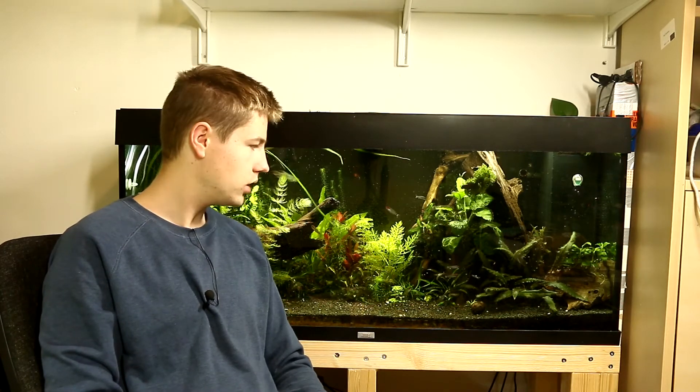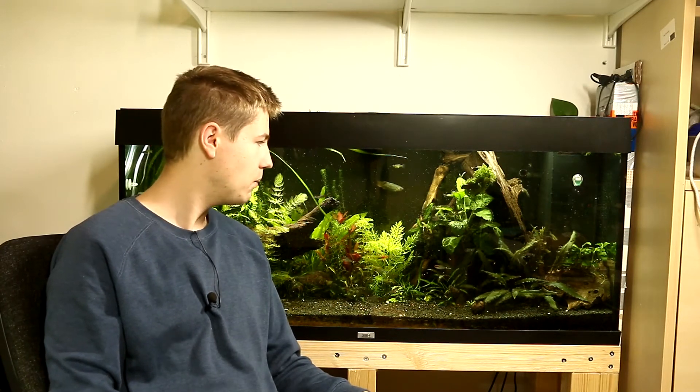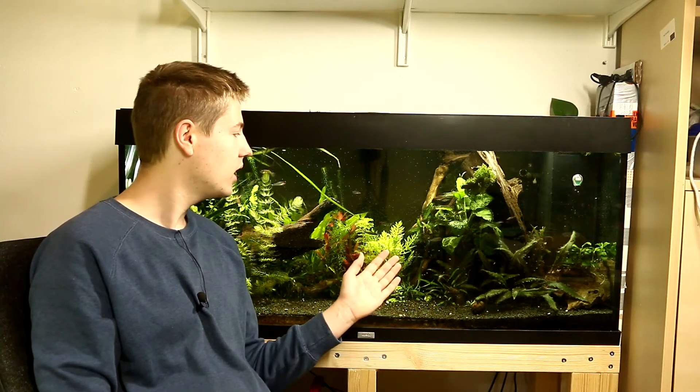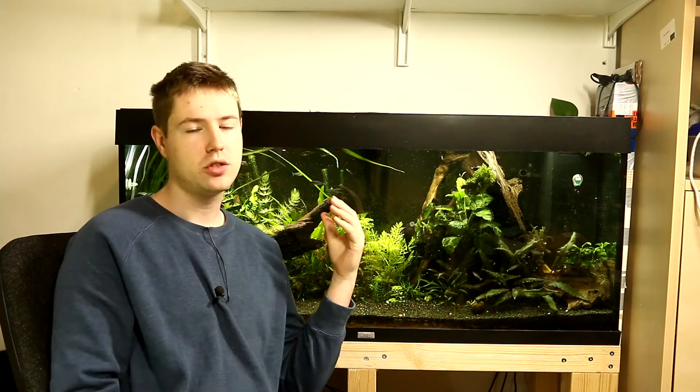At first the fish won't recognize it as food, but later on they might, especially when they turn hungry. Because if fish are not hungry, they are very picky. So a lot of fish will also start to eat algae and other organic material if they don't get food.